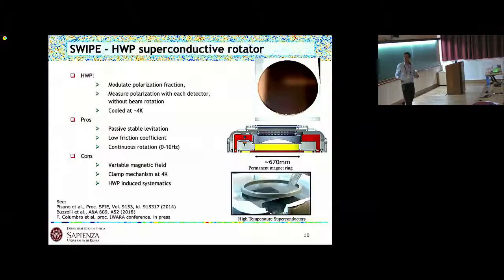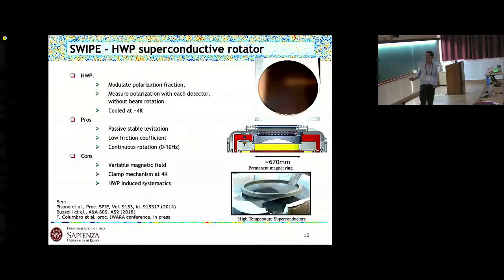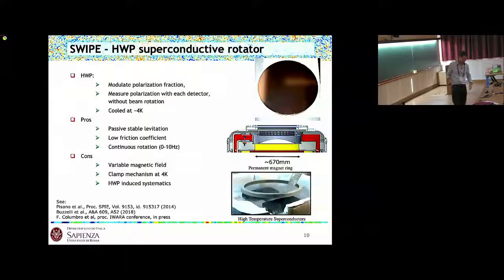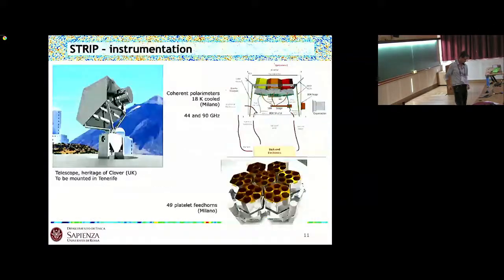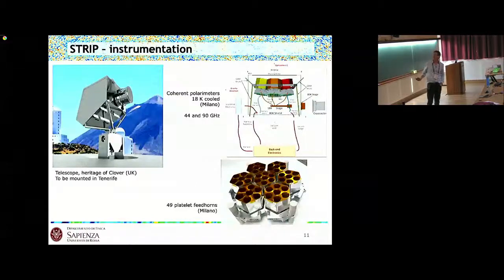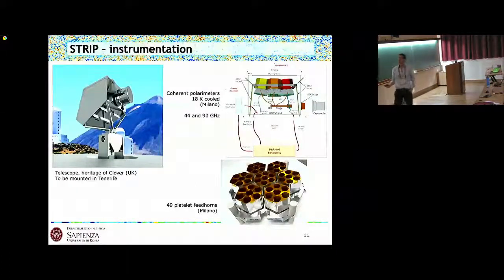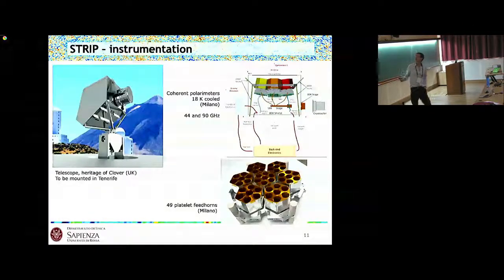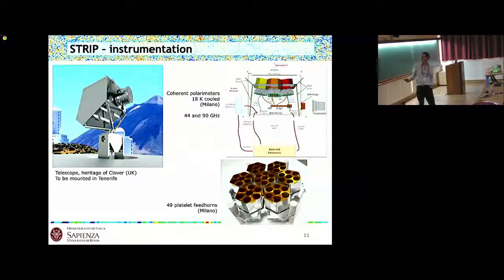It's levitating on magnetic bearings with very low friction coefficient and can spin up to 10 Hertz. The problem is we have magnetic fields which are not exactly constant inside the cryostat, so we have to be careful with the readout of the detectors. There must be a clamp mechanism at 4 Kelvin because you want to keep the half-wave plate in position before the magnets become superconducting. There is a big debate between pros and cons of the half-wave plate, as it introduces some systematic effects which have to be controlled. This is the prototype, it's 50 centimeters wide.